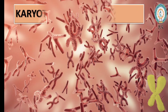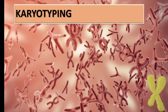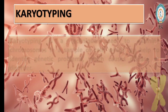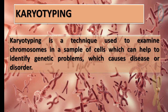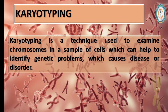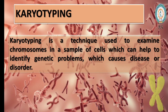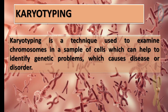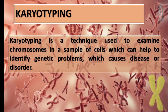What do we mean by karyotyping? Karyotyping is basically a technique used to study a sample of chromosomes from a sample of cells, which can help to identify genetic disorders or genetic diseases.